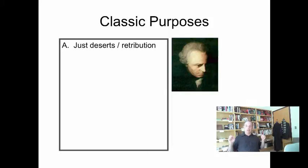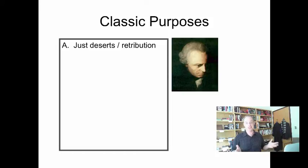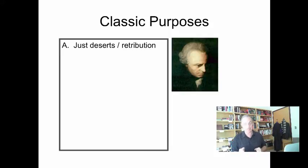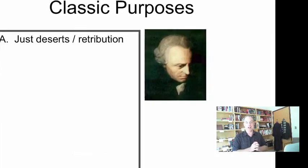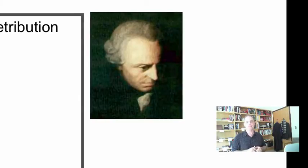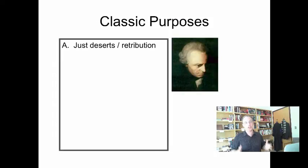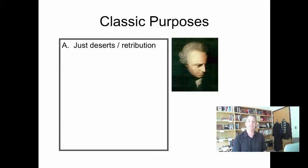We typically talk about there being four classic purposes of the criminal law. Some of them are what you would call non-utilitarian or deontological. This is just deserts — sometimes called retribution, or sometimes proportionality — embodied in the philosophy of Immanuel Kant. The basic idea here is that we are punishing not because we're trying to produce certain concrete real-world results. We are just punishing because it's the right thing to do, because there is an imbalance in the moral universe and we have to change that. We would do it even if nobody ever learned about the punishment, even if we were convinced it never would have any effect. We just do it because it's the right thing to do.